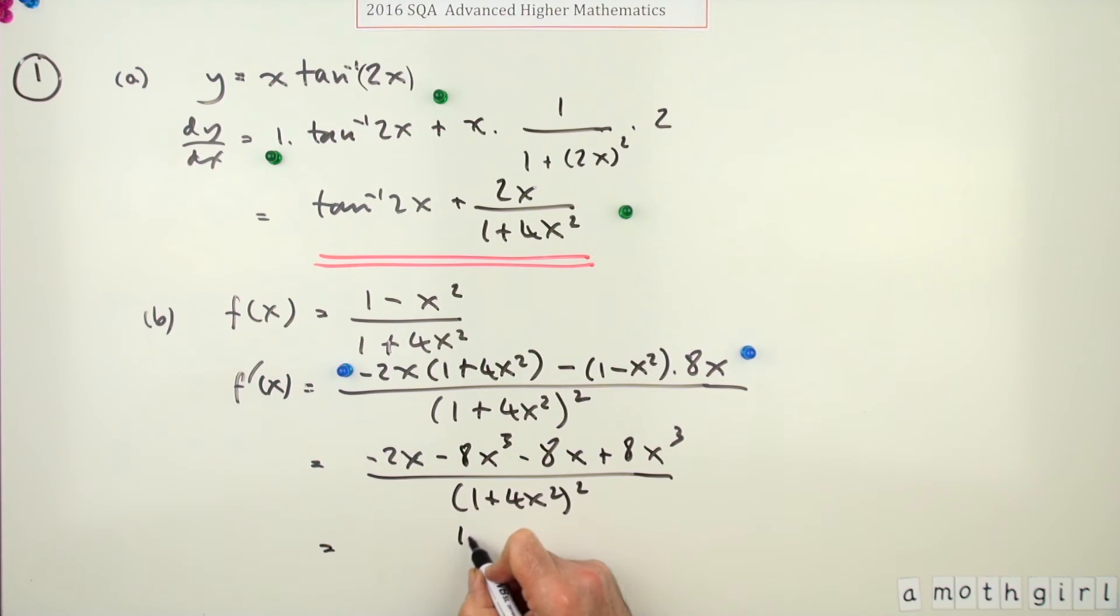So tidying it up, x cubed terms disappear, this comes to negative 10x. So put the 10x over the 1 plus 4x squared, over the 1 plus 4x squared all squared. And then the negative can either stay with the 10 or just join the whole fraction. And that's the third mark.